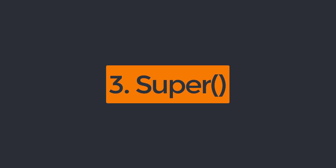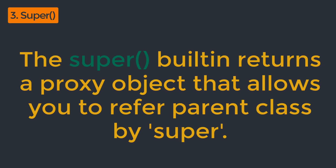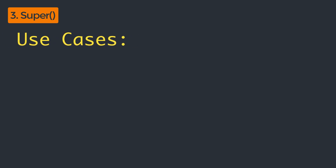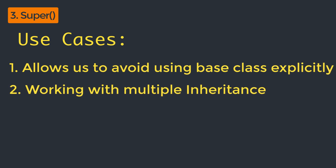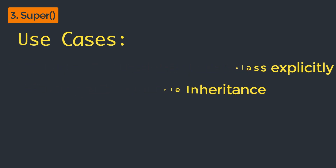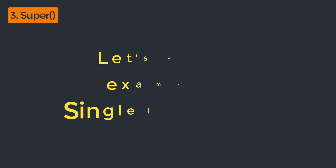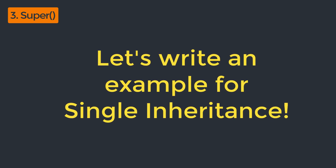The next function is the super function. The super built-in returns a proxy object that allows you to refer to the parent class by super. In Python, the super built-in has two major use cases: it allows us to avoid using the base class explicitly, and working with multiple inheritance can be easier by using this super keyword. Let's write a simple example for using this super function with single inheritance.